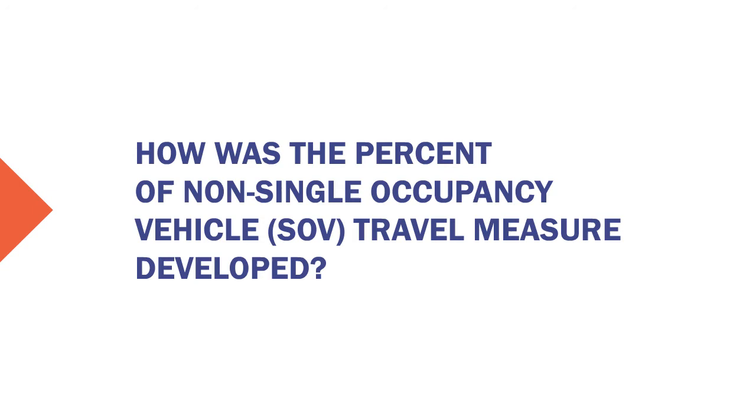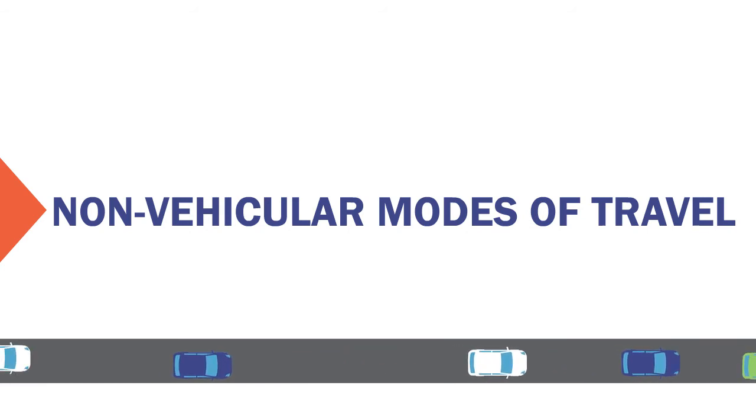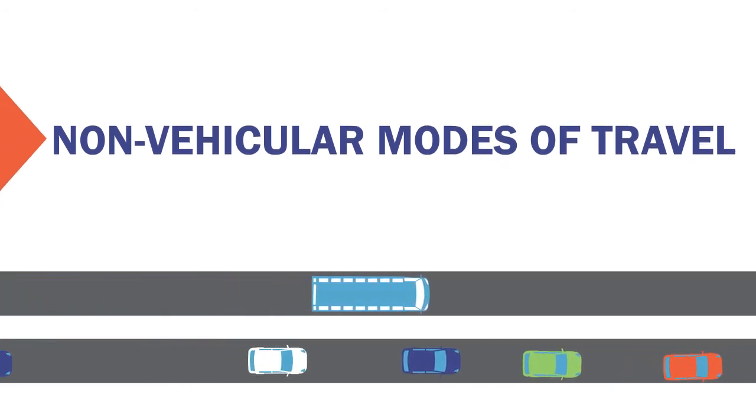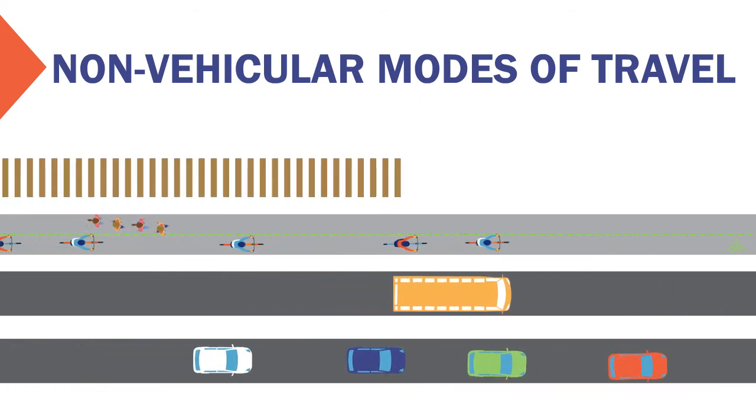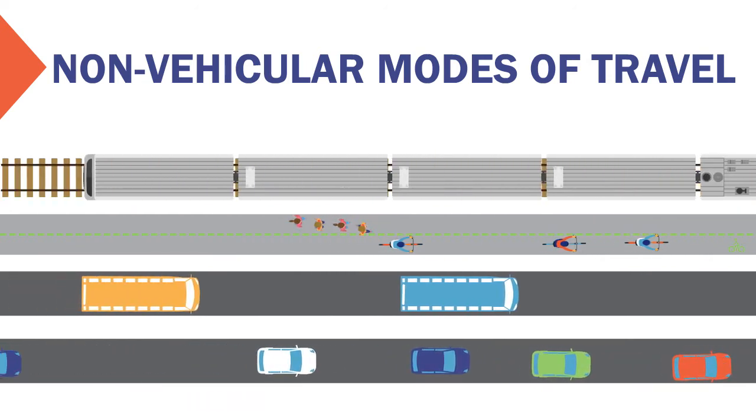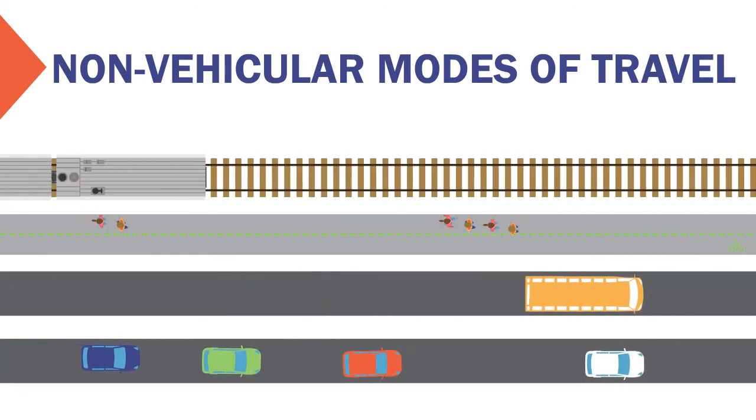How was the percent of non-single occupancy vehicle travel measure developed? Stakeholders asserted during the rulemaking process that the performance of the National Highway System and the impact of congestion require consideration of pedestrians, bicyclists, public transit riders, and other travelers. FHWA believes non-vehicular modes play an important role in reducing levels of criteria pollutants in urbanized areas and, because transportation in urbanized areas is inherently multimodal, it is important to account as much as possible for the options available to travelers. This measure will help carry out the CMAQ program, which recognizes investments that increase multimodal solutions and vehicle occupancy levels as strategies to reduce both criteria pollutant emissions and congestion.